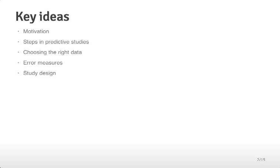The key ideas in this lecture are to talk about the motivation for why you might do prediction, and as a motivation for how you might choose data and build a specific type of study. We're going to talk about the steps in predictive studies. It's a very common misconception that you just pick a classifier and that's the end of a prediction study, but it actually starts way before that and ends very far after that. We're going to talk about choosing the right data, different error measures, and how to design a study so that you don't fool yourself when building a predictive function.